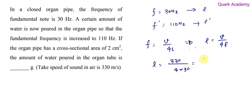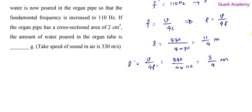Similarly, L dash we can calculate. L dash equal to V by 4F dash. V is again 330, 4 into F dash is 110, so you will get 3 by 4 meter. Now the change in length we can figure out.